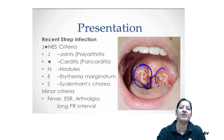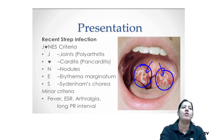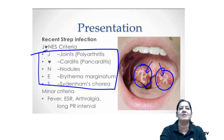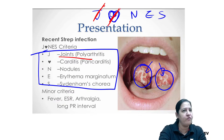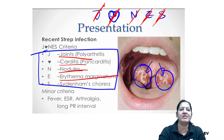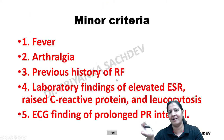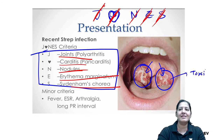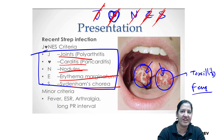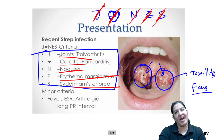Regarding minor criteria: fever is a minor criterion — because the child has fever during bacterial tonsillitis infection. Important distinction: arthritis (inflammation of joints) is a major criterion, while arthralgia (pain in joints without inflammation) is a minor criterion. Many MCQs are based on this difference. Arthritis is migratory polyarthritis — a major criterion. Arthralgia is pain in joints — a minor criterion.